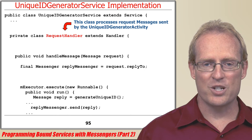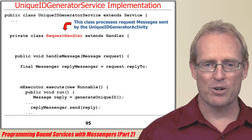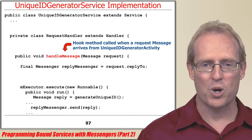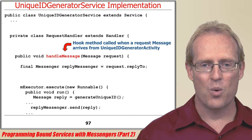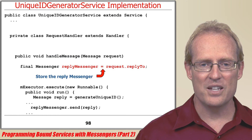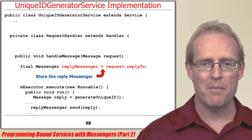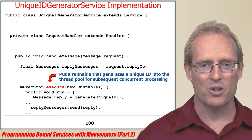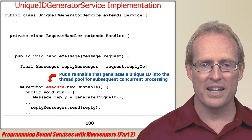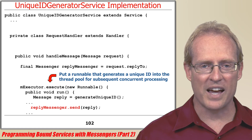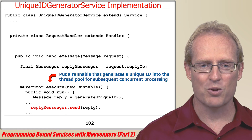Request messages sent from the unique ID generator activity to the unique ID generator service are processed by the request handler, which extends Handler and overrides the handleMessage hook method that's dispatched by the handler framework when a request message arrives from the activity. This hook method stores a reference to the reply messenger in a local variable and then creates and enqueues an anonymous runnable that's executed in a thread in the thread pool, where it generates a unique ID and sends the ID back to the activity via the reply messenger reference.